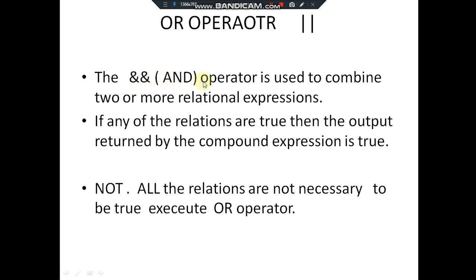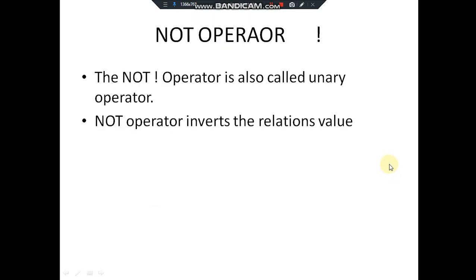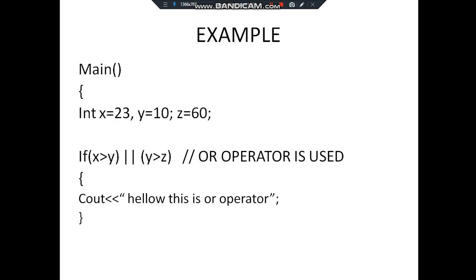Now the OR operator, represented by two vertical slashes (||). Here we have combined two expressions: 23 is greater than y, and y is greater than z. 23 is greater than z which is true, but the second statement is false because y is equal to 10 and 10 is not greater than z. The OR operator will execute the statement because if one of the conditions is true, the statement executes.